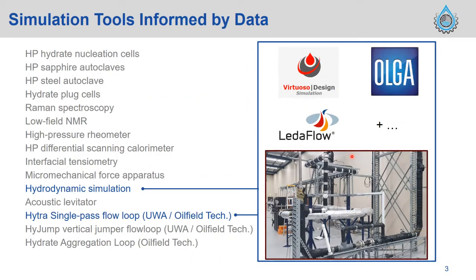To state the obvious, simulation tools need to be informed by data. In terms of where the hydrate extension came from, that data was largely from benchtop apparatus and intermediate scale apparatus — we can see the Hydra and high-jump flow loops, and those at Oilfield Technologies. When we first built the extension, those benchtop and intermediate-scale experimental data told us that every little bit of the mechanics was being implemented correctly. But more recently, through our collaborative effort with Wood and through Virtuoso, we've started taking a holistic view of validation by looking at field data, identifying gaps, and carrying those forward in our development process.